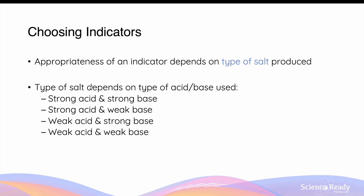Therefore, the appropriateness or the suitability of an indicator depends on the type of salt produced. The type of salt depends on the type of acid and base that are used in the titration. This could be a combination of strong acid and strong base, strong acid and weak base, weak acid and strong base, or weak acid and weak base. We'll go through each combination in detail individually.